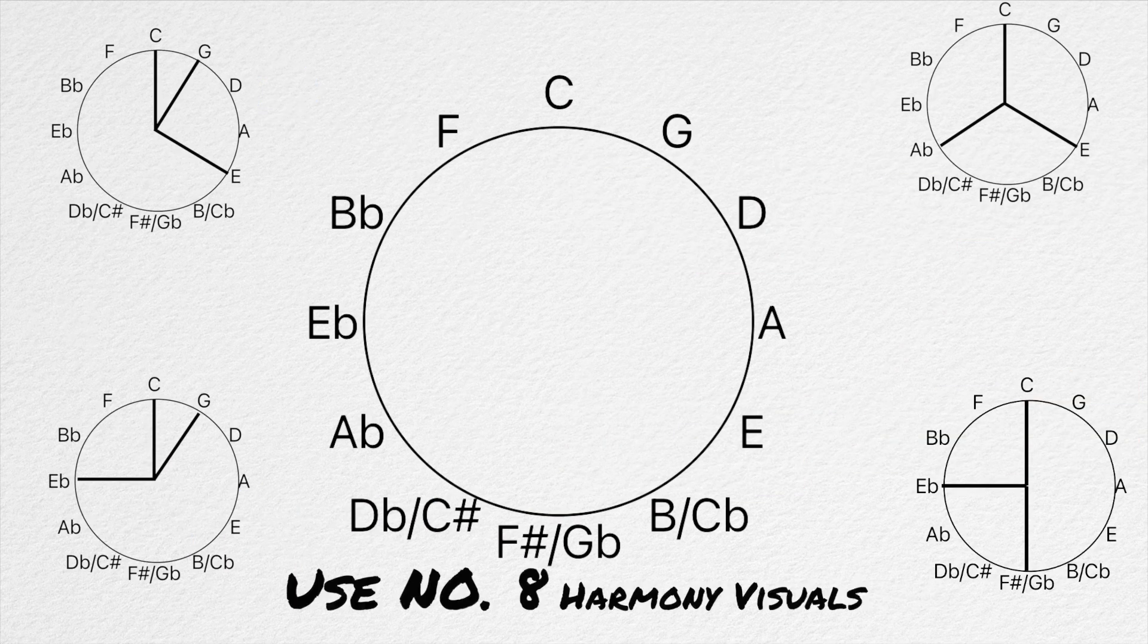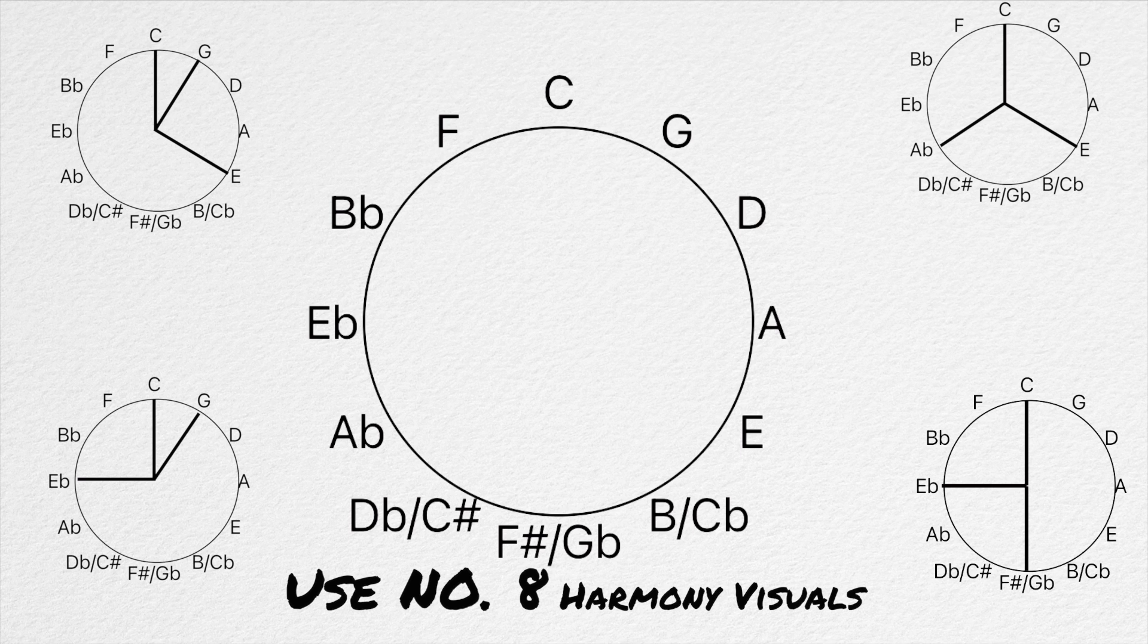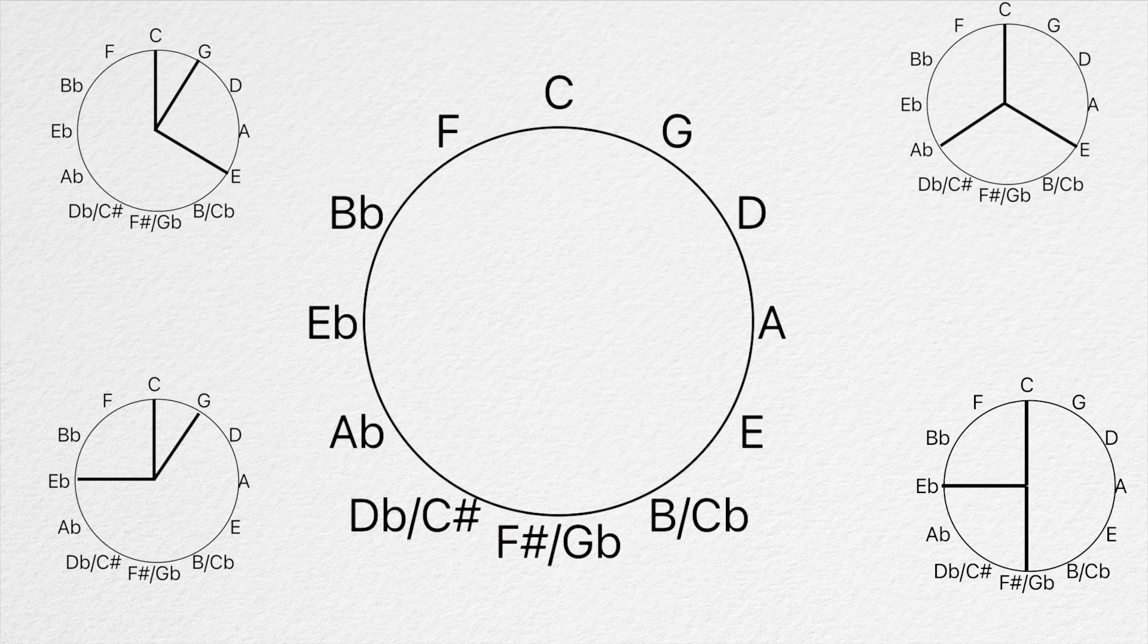The circle also gives us a chance to visualize harmony in a unique way. Each chord has a specific shape that is made by connecting the notes of that chord. This shape can then be rotated to find every chord of that chord type. The four shapes shown here are major, minor, diminished, and augmented triads.